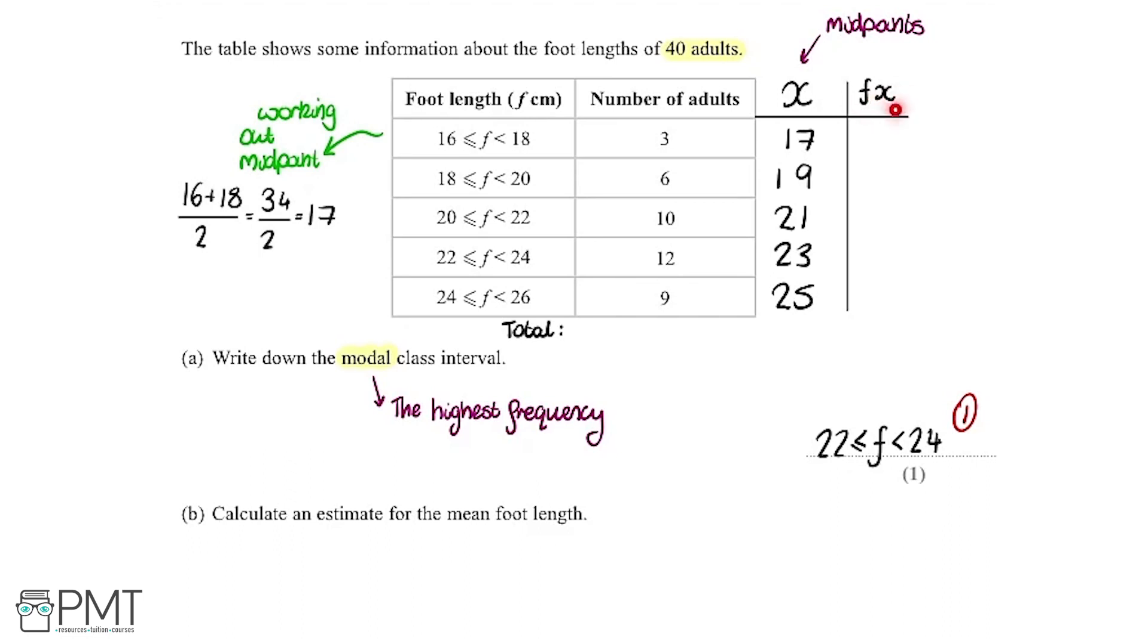Now I've got another column here which is f multiplied by x. I'm using f here to represent the frequency and this is our column that is our frequency, so number of adults. In this column we're going to write down our midpoint multiplied by our frequency. In this row we're going to do 3 multiplied by 17 and the next one we're going to do 6 multiplied by 19 and so on.